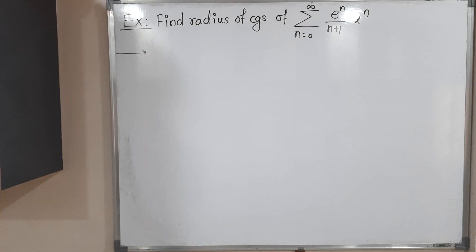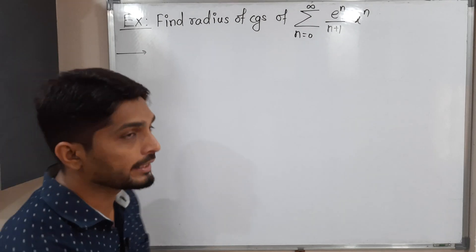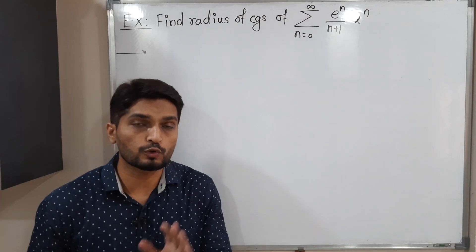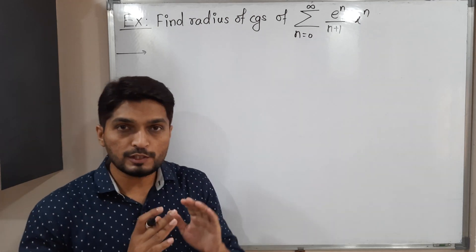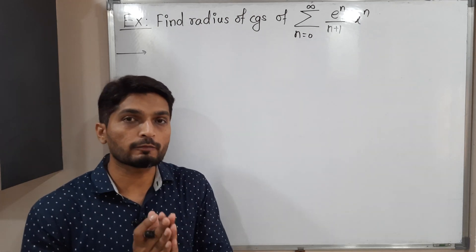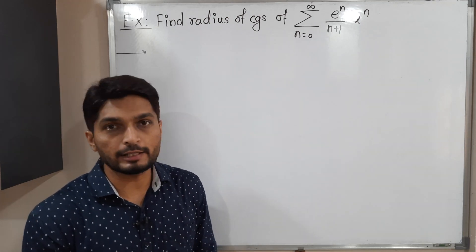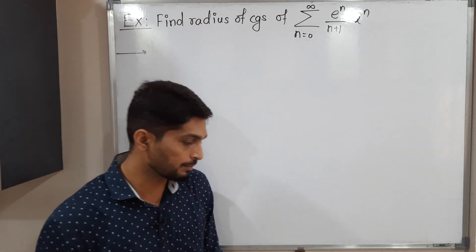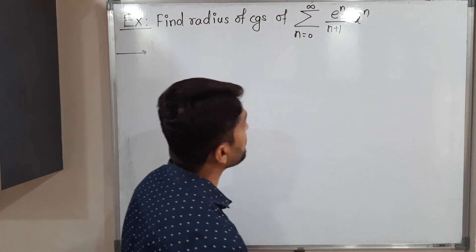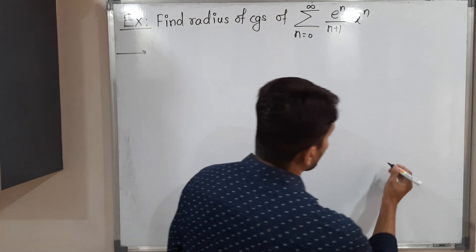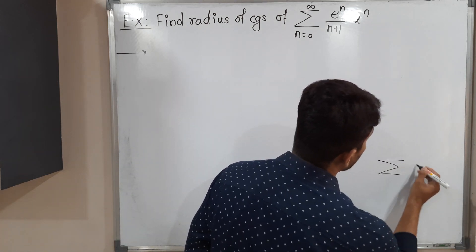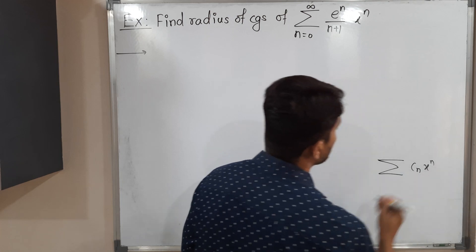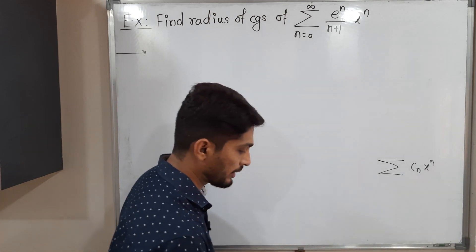Hi everyone. In this video we are going to find the radius of convergence of two power series. This is the first example. We have this power series and we have to find its radius of convergence. First of all, I will compare the given power series with the standard form C_n x^n.